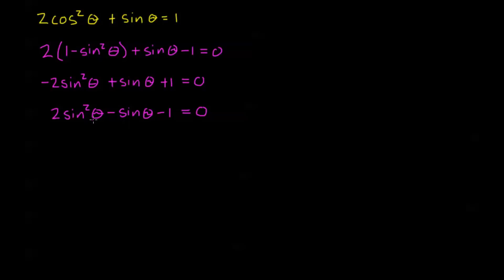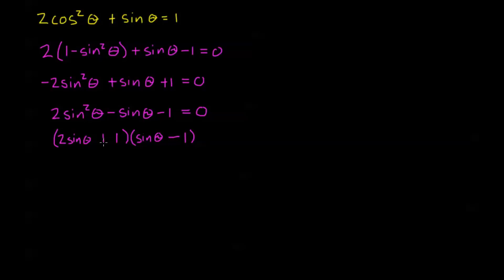So I'm going to factor 2 sine squared theta minus sine theta minus 1. One factor will have 2 sine theta and the other will have sine theta — those are my only options. They're both going to have a 1. Because it's a negative 1 in the quadratic, one factor has a plus sign and the other has a minus sign. The negative sign in the middle tells me I need a negative and a plus, giving negative 2 sine plus 1 sine, which gives a negative sine. Factoring is done.